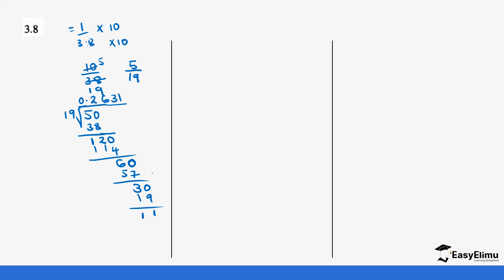We used the long division method to evaluate 5 over 19, which came from our reciprocal of 3.8. There is another way to arrive at 5 over 19. We can change 3.8 into standard form: 3.8 is the same as 38 times 10 to the power of negative 1, which is 38 over 10. Converting to a reciprocal gives 10 over 38. Either approach leads to the same value.